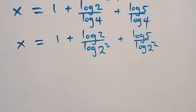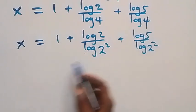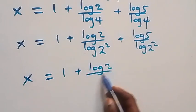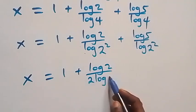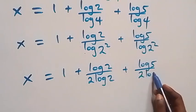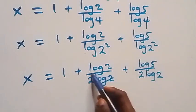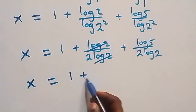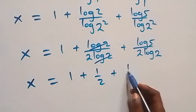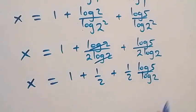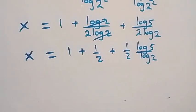Applying the power law on log(2 squared) gives 2 log 2. So log 2 over log(2 squared) equals 1 over 2, and we get x equals 1 plus 1 over 2, plus 1 over 2 times log 5 over log 2. Since 1 plus 1 over 2 equals 3 over 2, we have x equals 3 over 2 plus 1 over 2 times log 5 over log 2.